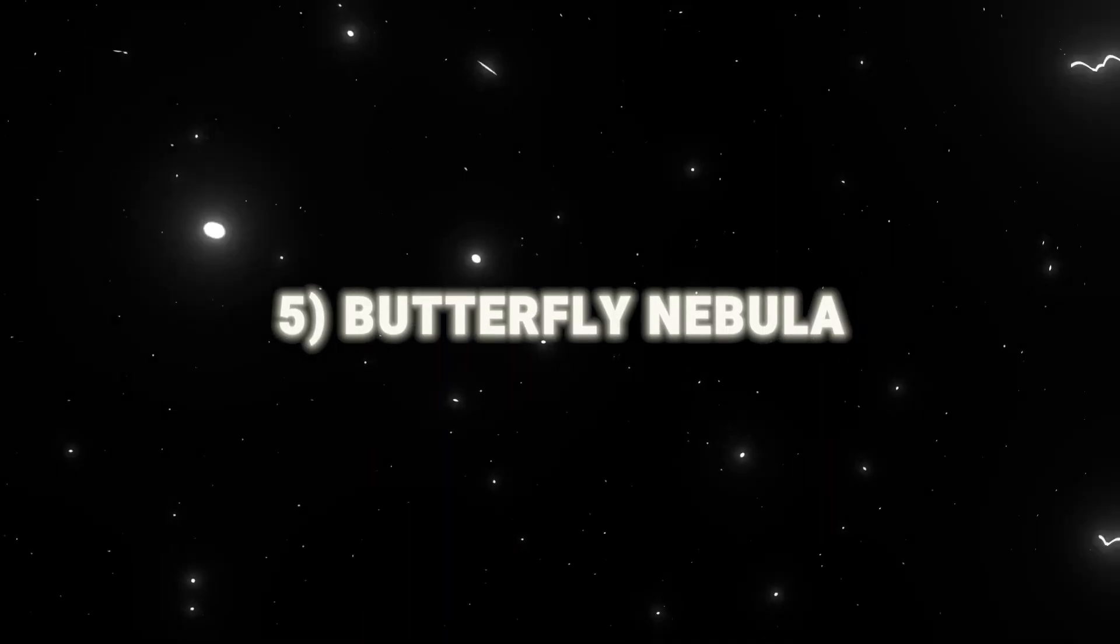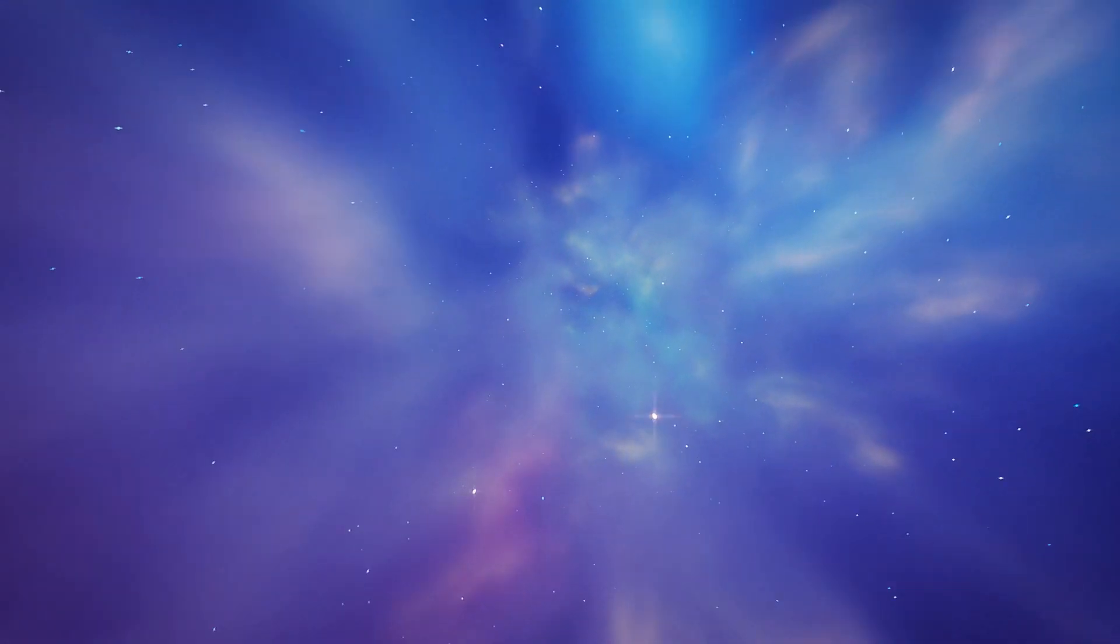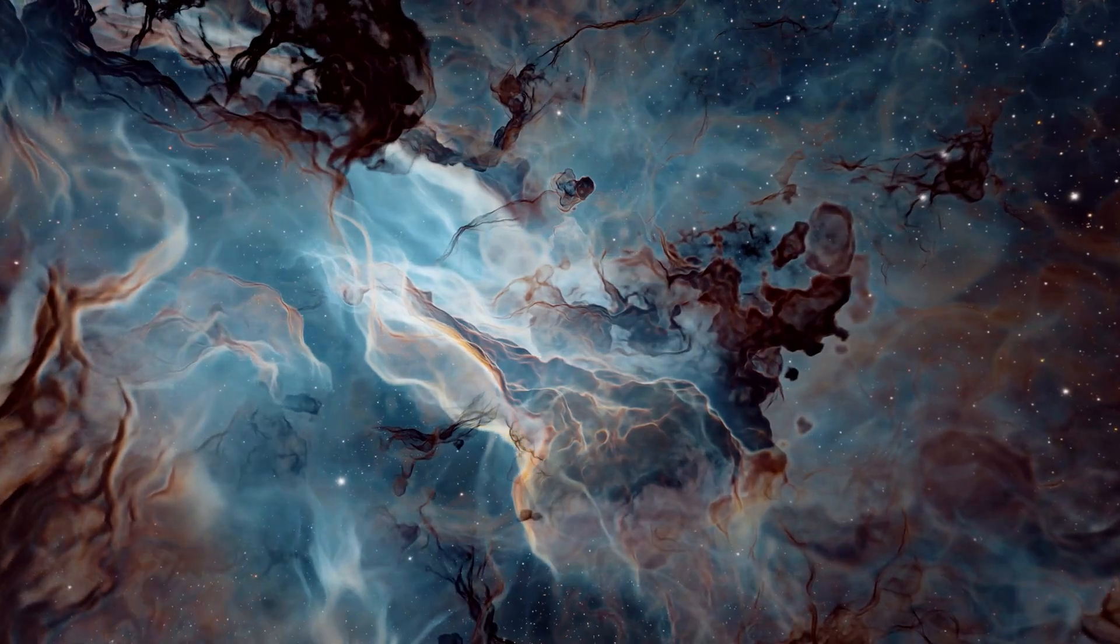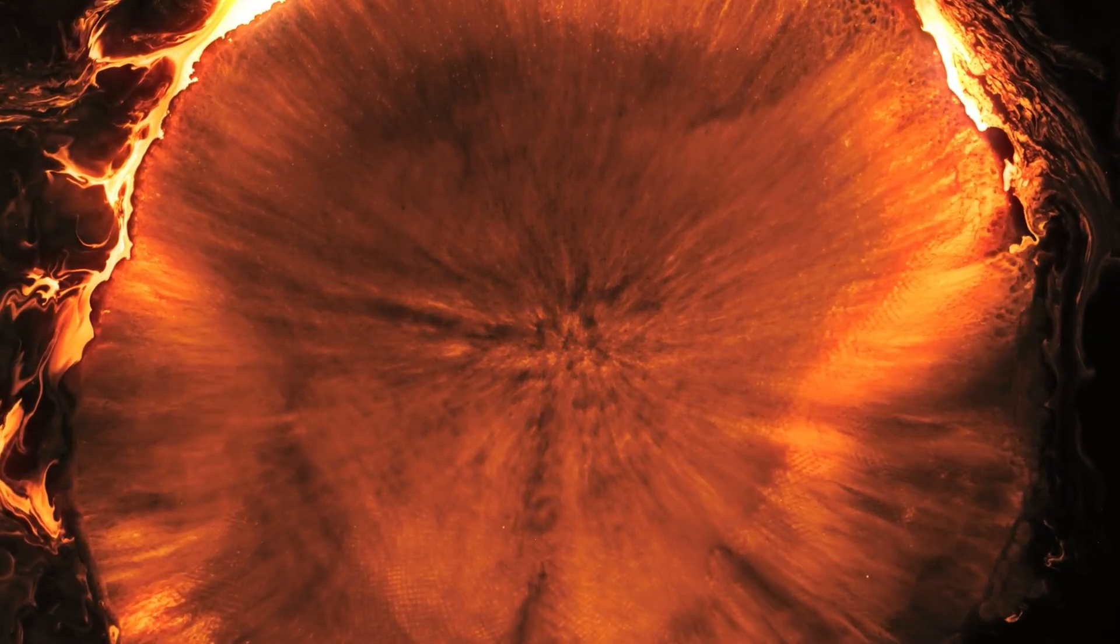Butterfly Nebula. It shows a colorful display of a star's death. The wings are areas of gas heated to over 36,000 Fahrenheit, about 20,000 degrees Celsius. It moves through space at more than 600,000 miles per hour, which is 966,000 kilometers per hour.